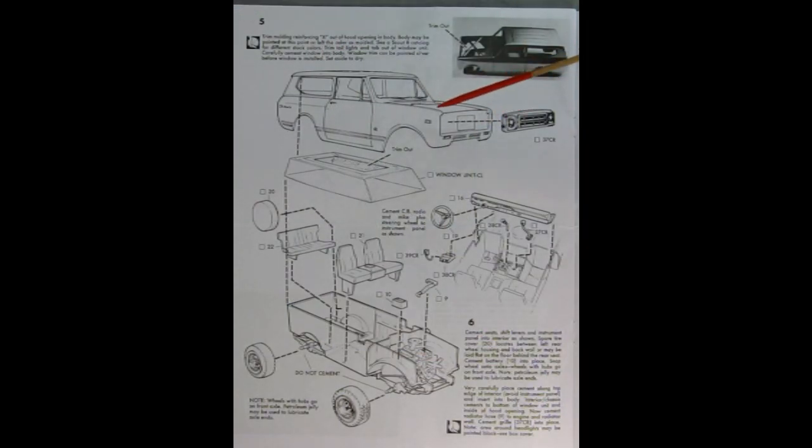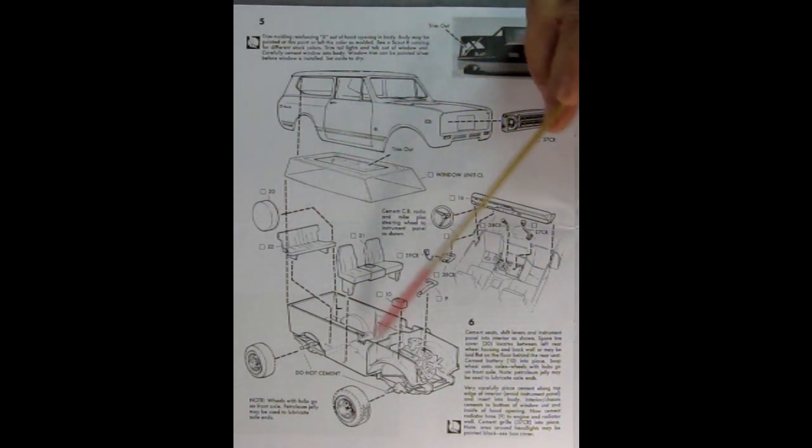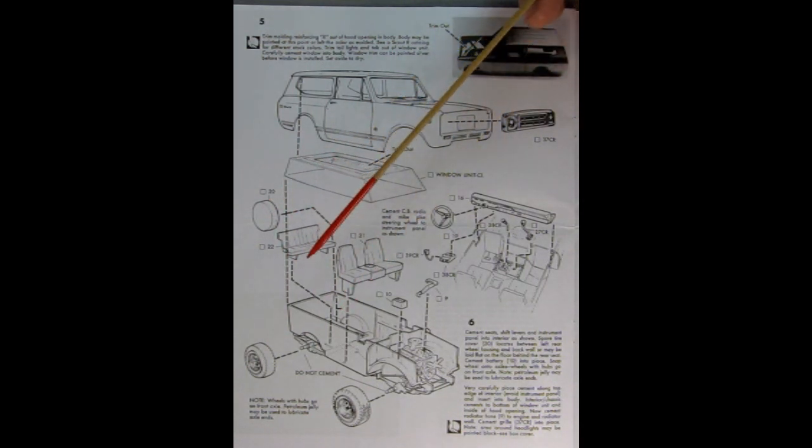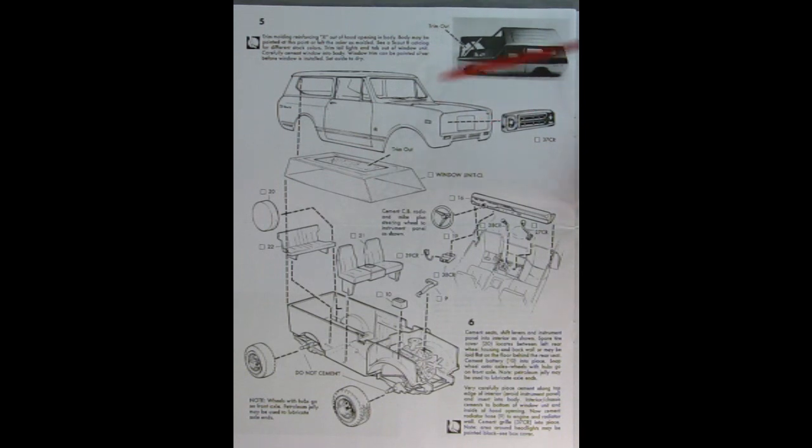And down below, we also have these wonderful photographs showing us just how this looks once you get it all together. Panel five shows our body and glass and interior all going together, as well as the front grille. So here it shows to trim out this cross in the molded plastic body before you begin. Then we've got our body, our windshield. Here's the interior. We've got our spare tire being glued in place, as well as the back bench seat and the front buckets with the center console. Then in the engine bay, we have our battery and this upper radiator hose. Here we've got a two-piece CB radio going into the interior.